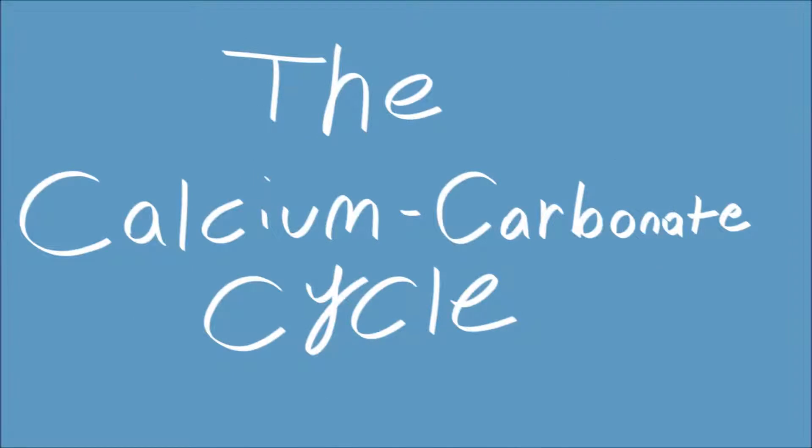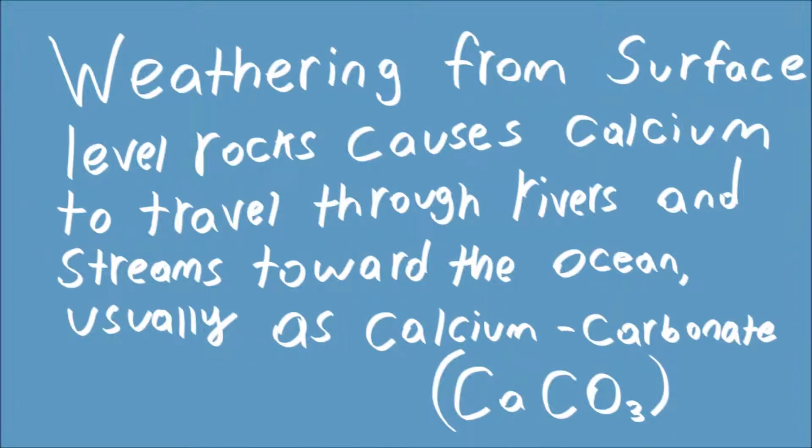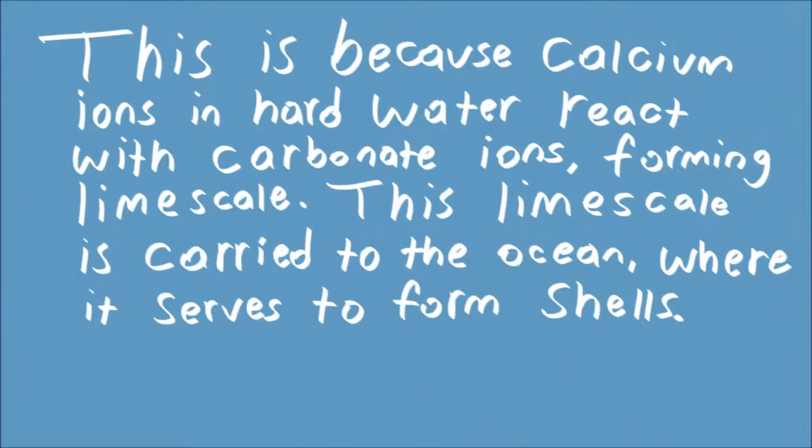The calcium carbonate cycle. Weathering from surface level rocks causes calcium to travel through rivers and streams toward the ocean, usually as calcium carbonate. This is because calcium ions in hard water react with carbonate ions, forming limescale. This limescale is carried to the ocean, where it serves to form shells.